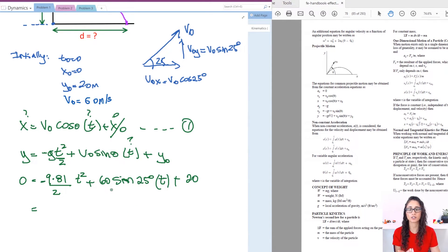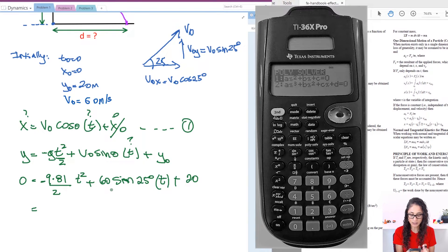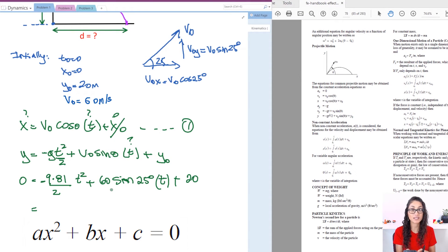So in the calculator, if you have the TI 36X Pro, which I did recommend in the previous videos for the FE exam, you could do second and hit cosine. And then you will see the polynomial equation, which is ax squared plus bx plus c equals to zero. Then press enter.